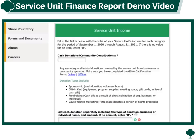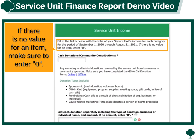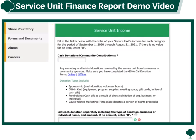Next we will enter the total income your service unit received. If there is no value for an item, make sure to enter zero. If you have any cash donations or community contributions, like any monetary or in-kind donations received by the service unit from businesses or community sponsors, enter them here.